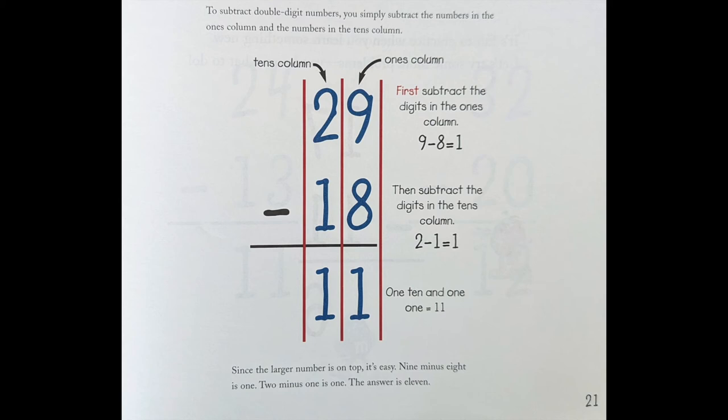Then subtract the digits in the 10's column: 2 - 1 = 1. One 10 and one 1 equals 11. Since the large number is on top, it's easy. 9 - 8 = 1, 2 - 1 = 1. The answer is 11.